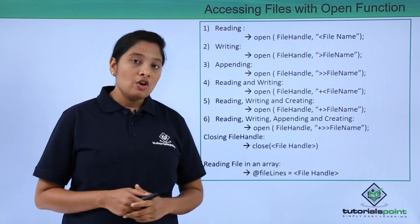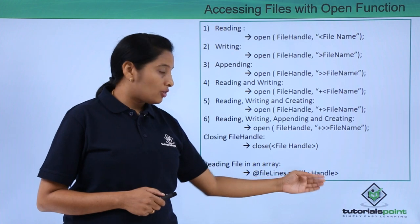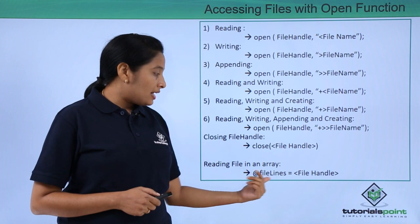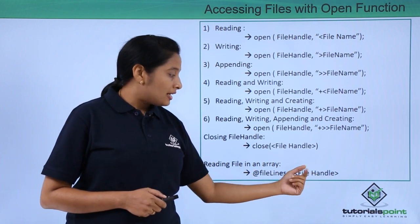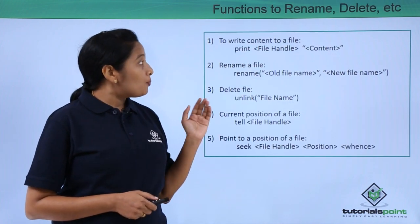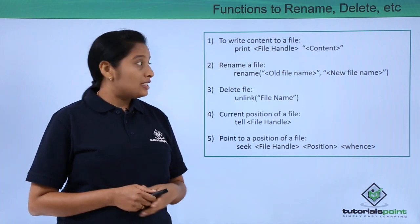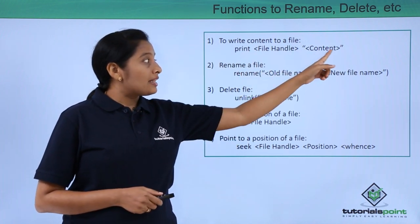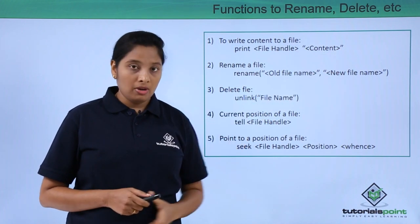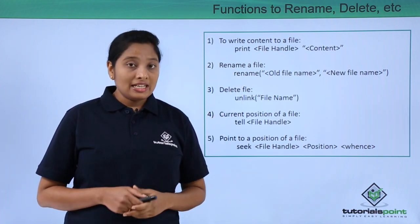After opening the file handle, you have to close it using the close function followed by the file handle. To save the contents of the file into an array, give the array name equal to the file handle enclosed in less than and greater than symbols. To print or write something to a file, use print followed by the file handle and whatever you want to write, enclosed in single or double quotes. To rename a file, use the rename function; to delete a file, use the unlink function.